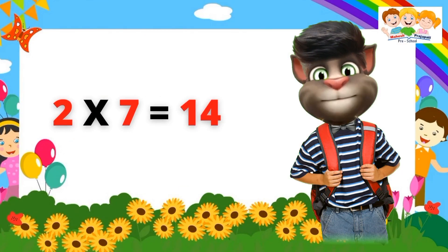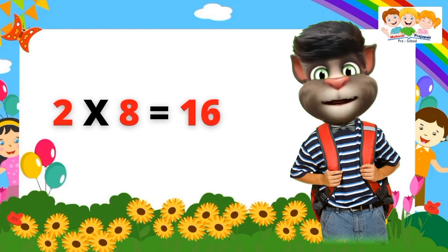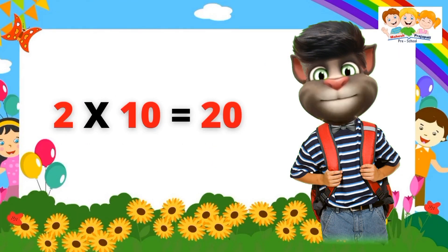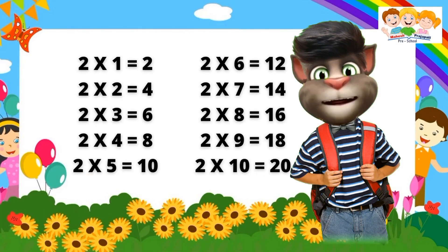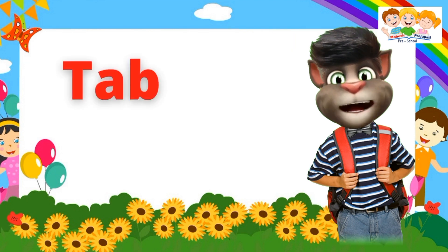Two seven's are fourteen. Two eight's are sixteen. Two nine's are eighteen. Two ten's are twenty. Two one's are two. Two two's are four. Two three's are six. Two four's are eight. Two five's are ten. Two six's are twelve. Two seven's are fourteen. Two eight's are sixteen. Two nine's are eighteen. Two ten's are twenty.